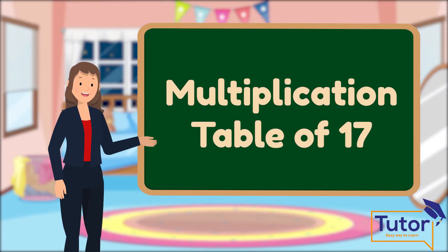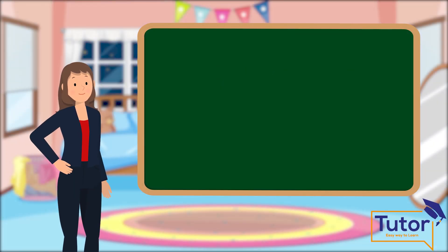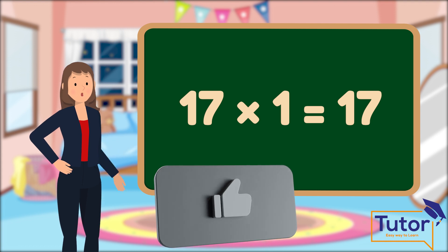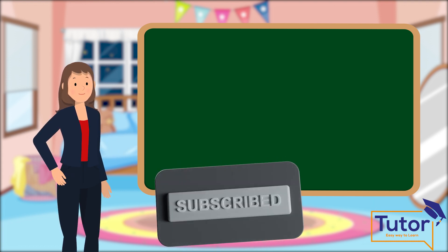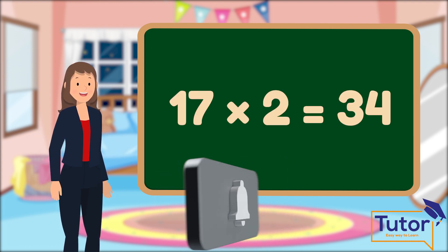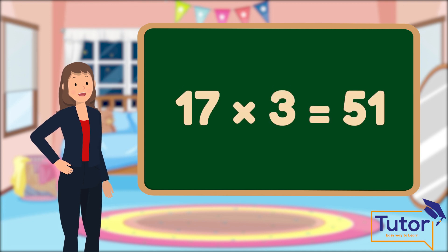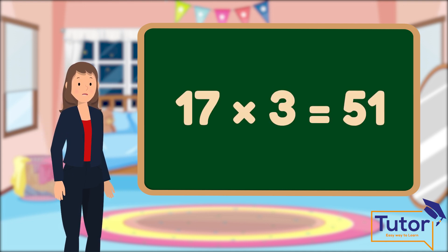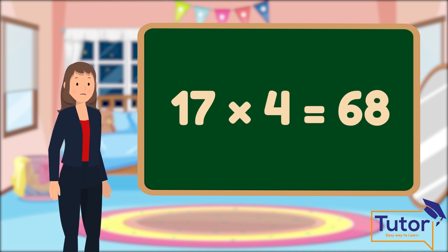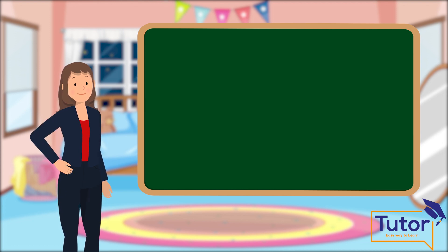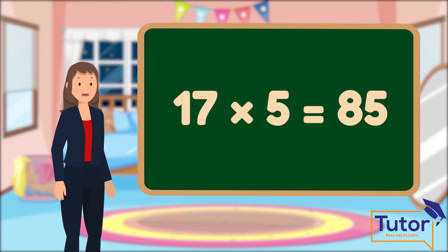Multiplication table of 17. 17 into 1 equals 17. 17 into 2 equals 34. 17 into 3 equals 51. 17 into 4 equals 68. 17 into 5 equals 85.